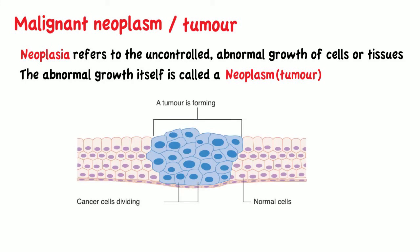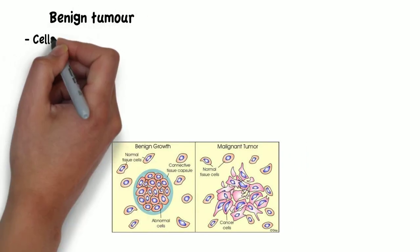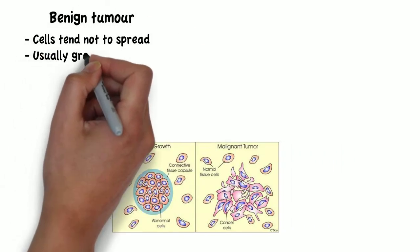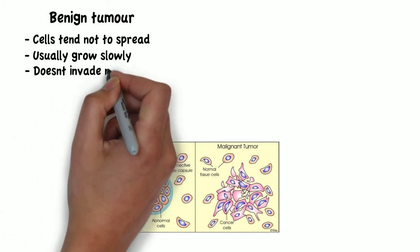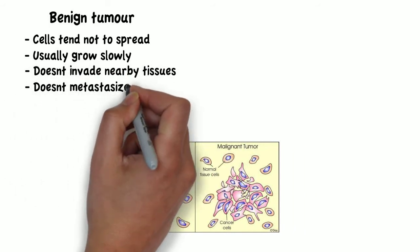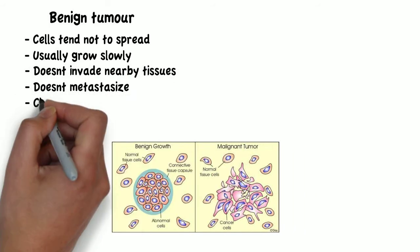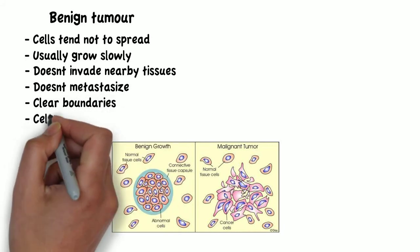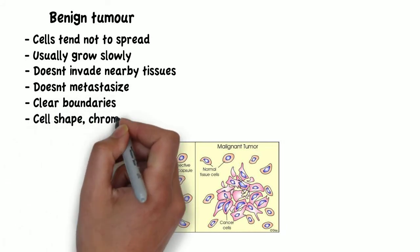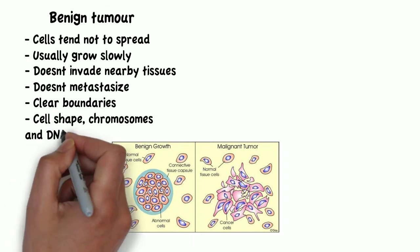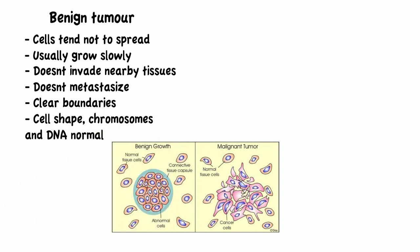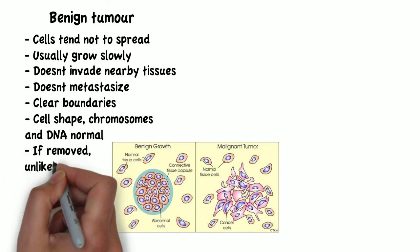It is important to differentiate between a benign tumor and a malignant tumor, as they present very different prognoses. In a benign tumor, the cells tend not to spread and usually grow slowly. The tumor doesn't invade nearby tissue and doesn't metastasize. The tumor also tends to have clear boundaries under a microscope, and the cell shape, chromosomes, and DNA generally appear normal. Benign tumors may not require treatment and, if removed, they are unlikely to return.